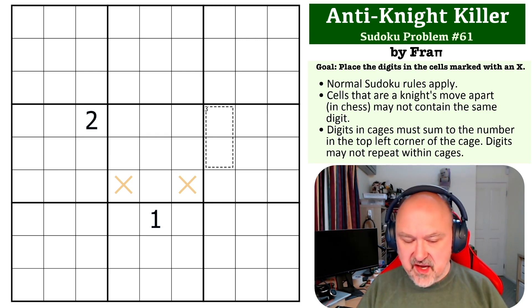There's also a killer cage, and digits in the cage must sum to the number in the top left corner. Now it's important to remember you can only place the digits in cells marked with an X. Even if you can figure out other digits, if you place those other digits the solution checker will not work.